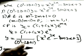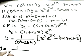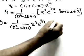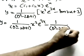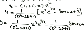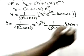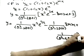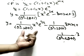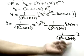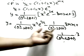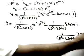For the particular integral, we have PI = (1/(D²−2D+1))·[x²·e^(3x) − sin(2x) + 3]. We separate this into three parts: yp = yp1 + yp2 + yp3. Let me solve each one separately to explain clearly.